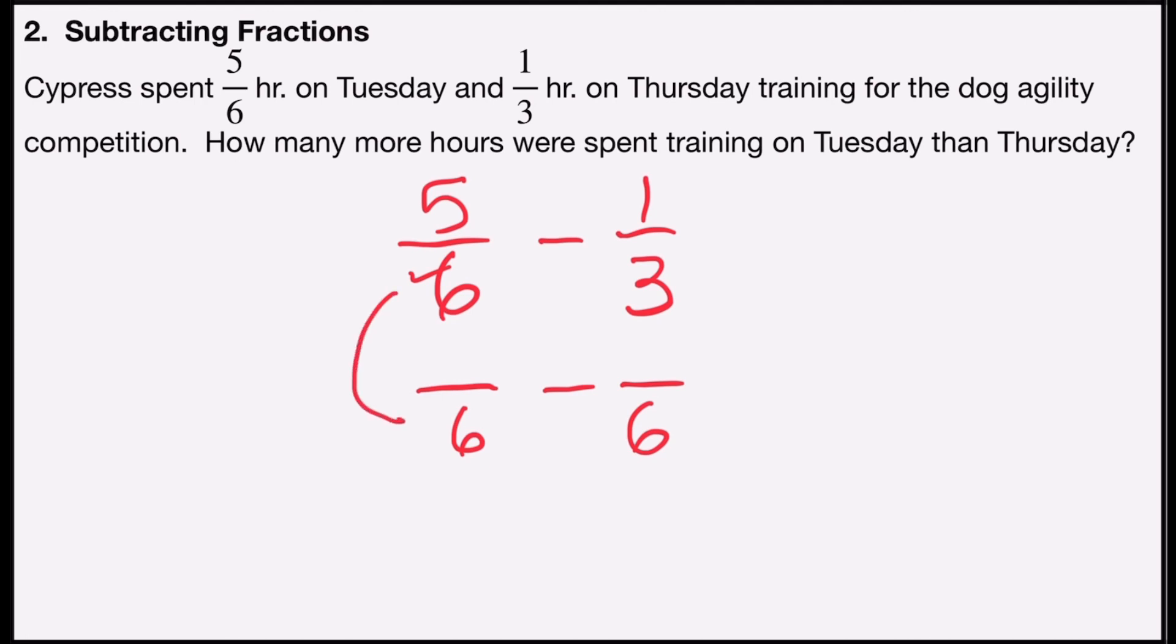Since I kept the same denominator of six in the first fraction, I'll keep the same numerator of five. For the second fraction, I'm going to rename it. Three times what number is six? And that's two. So I'm going to multiply by the form of one, 2/2, and two times one is two. That becomes my new numerator.